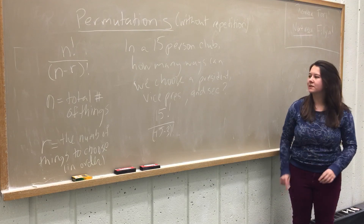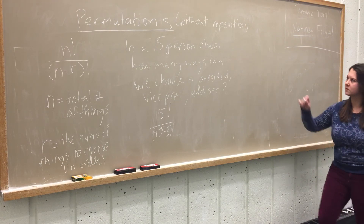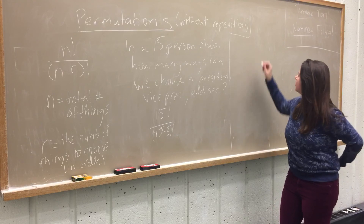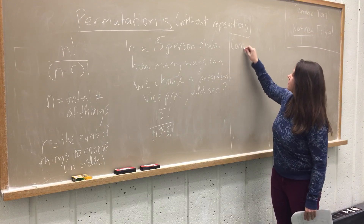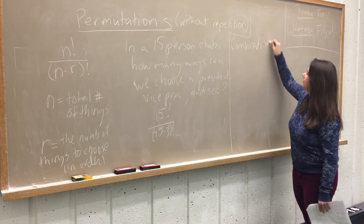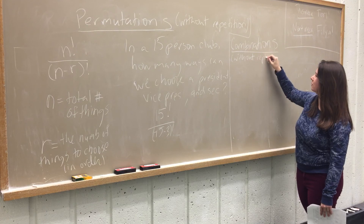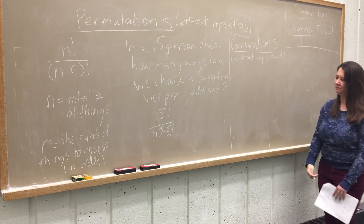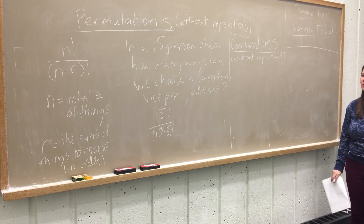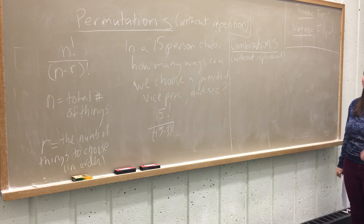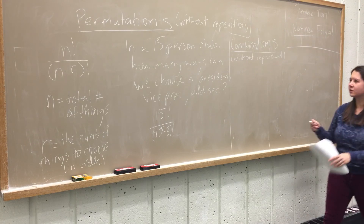I brought this example up to use as a springboard to talk about combinations — also without repetition. Combinations are where the order does not matter. So let's ask a similar question: in our 15-person club, how many ways can we choose a three-person committee? Now if I choose Will, Jonathan, and Edgar, or Edgar, Will, and Jonathan — that's the same committee. The order doesn't matter, and we don't want to count it twice.